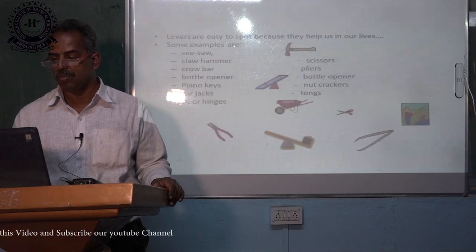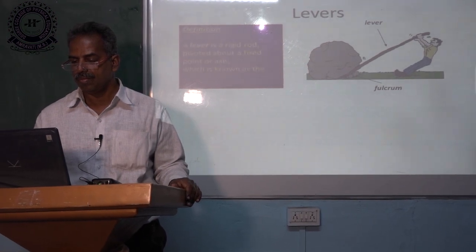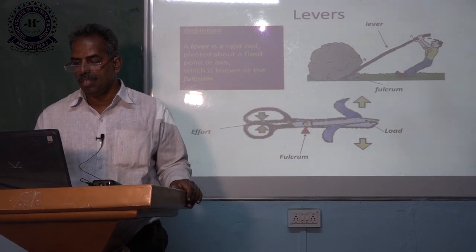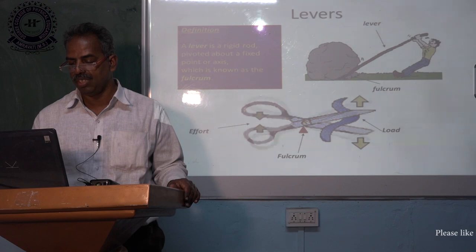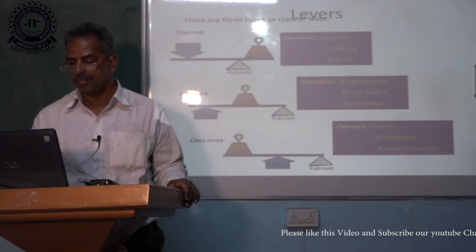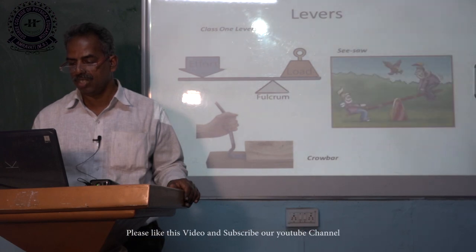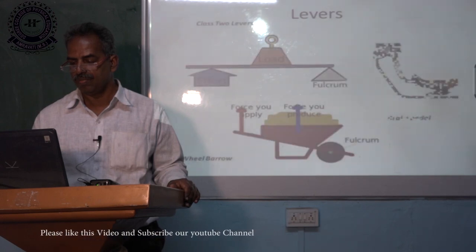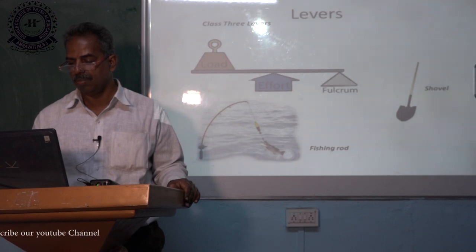Levers are easy to spot because they help us in our lives. Some examples are shown here with their names. A lever is a rigid rod pivoted about a fixed point or axis known as the fulcrum. It is clearly explained with examples showing how scissors work, and what is the resistance and effort or force. Additional examples shown include a see-saw, a jack, a brake pedal, a fishing rod, and a shovel.